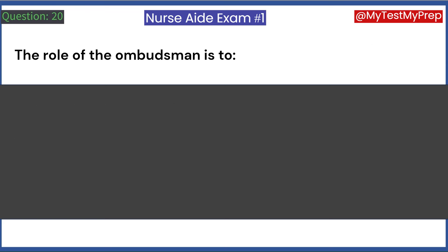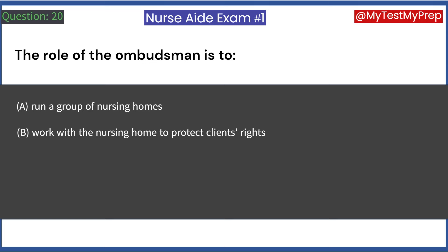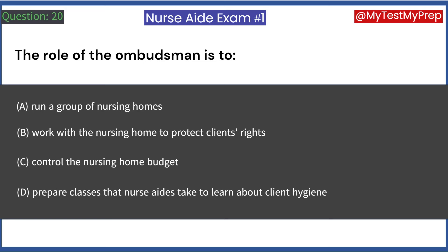The role of the ombudsman is to: A. Run a group of nursing homes. B. Work with the nursing home to protect clients' rights. C. Control the nursing home budget. D. Prepare classes that nurse aides take to learn about client hygiene. Answer: B. Work with the nursing home to protect clients' rights.